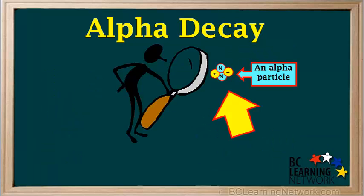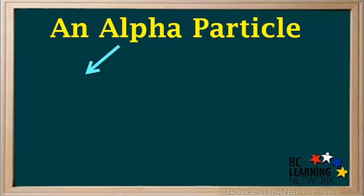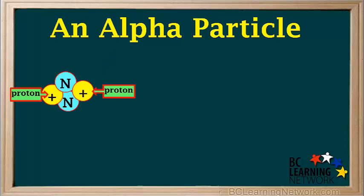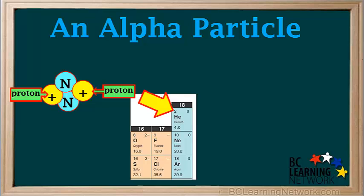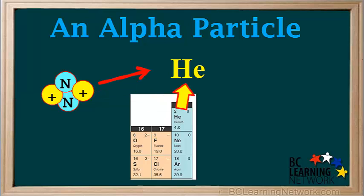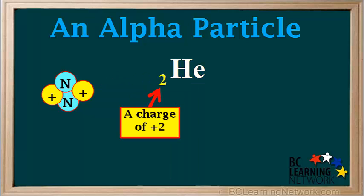Let's take a closer look at an alpha particle. An alpha particle is made up of two protons, shown here as yellow circles with a plus sign, and two neutrons, shown here as blue circles. Because it has two protons, and helium is element number two, it is actually a helium nucleus. So its symbol contains the symbol for helium, He. The atomic number two, written on the bottom left of the symbol, shows that this nucleus has a charge of plus two, because an alpha particle has two protons, and protons are positive.